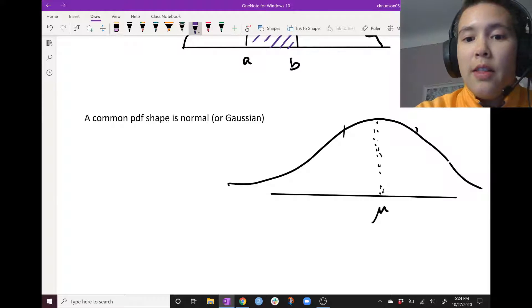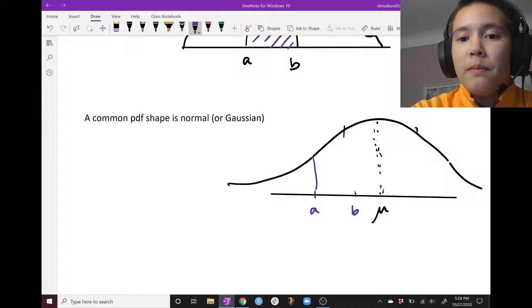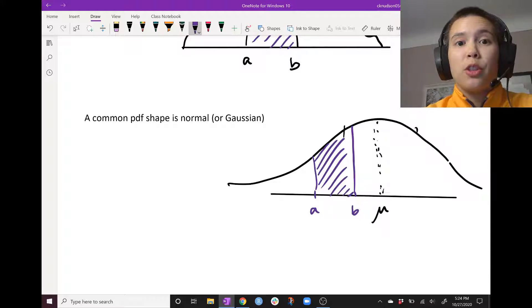So we can calculate the area under the curve. So let's do a to b here. The probability that our random variable is between a and b is that purple shaded area there.